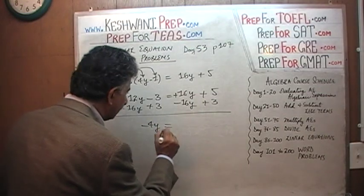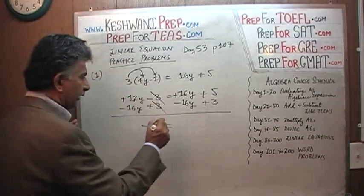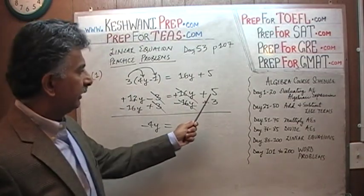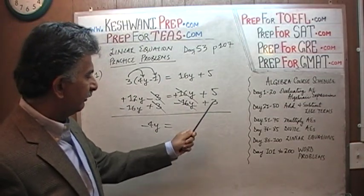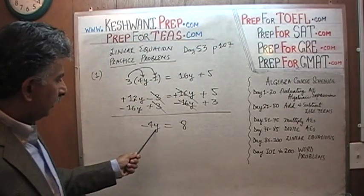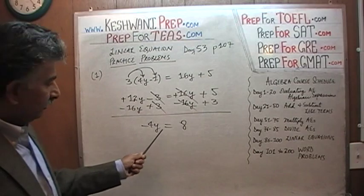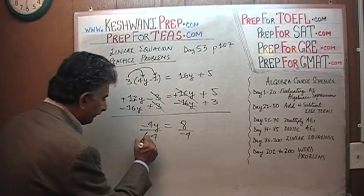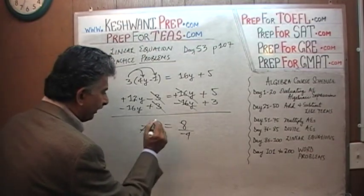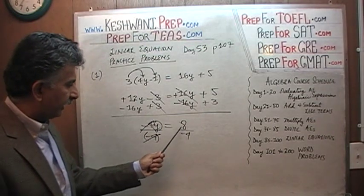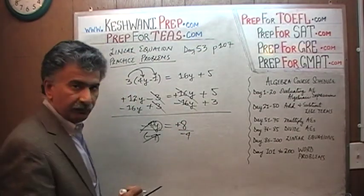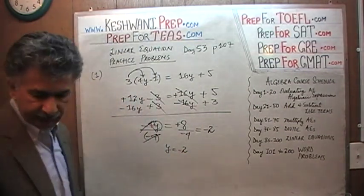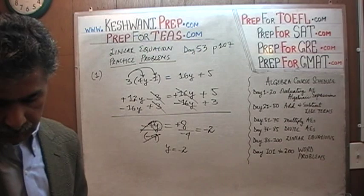We get negative 4y on the left — because 12y minus 16y is negative 4y — and the negative 3 and positive 3 cancel out, leaving 5 plus 3 which is 8 on the right. So we have negative 4y equals 8. We are not interested in negative 4y; we want y by itself, so we divide both sides by negative 4. This gives us y equals 8 over negative 4, which is negative 2. Our y equals negative 2. That's it — we are done.